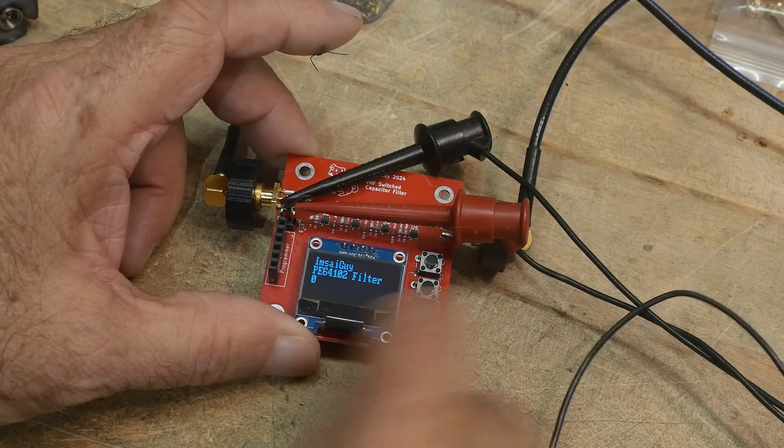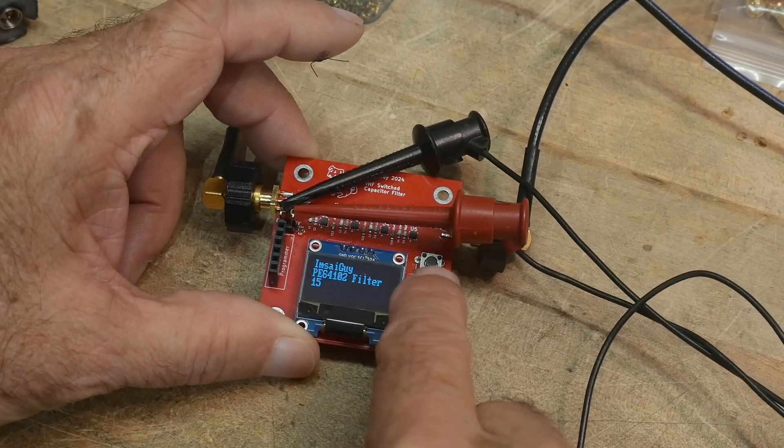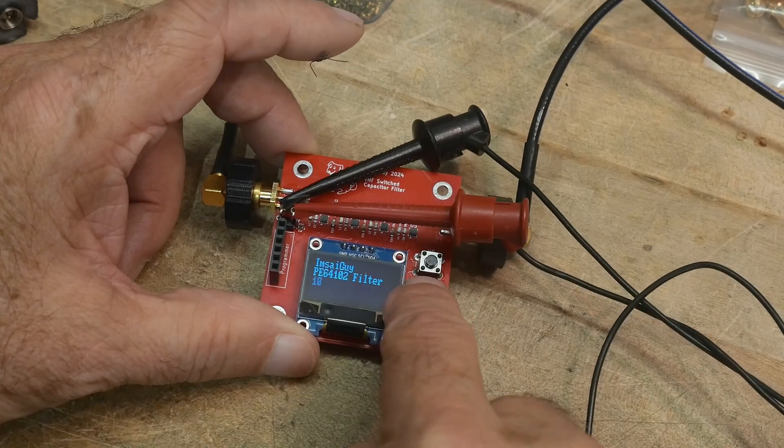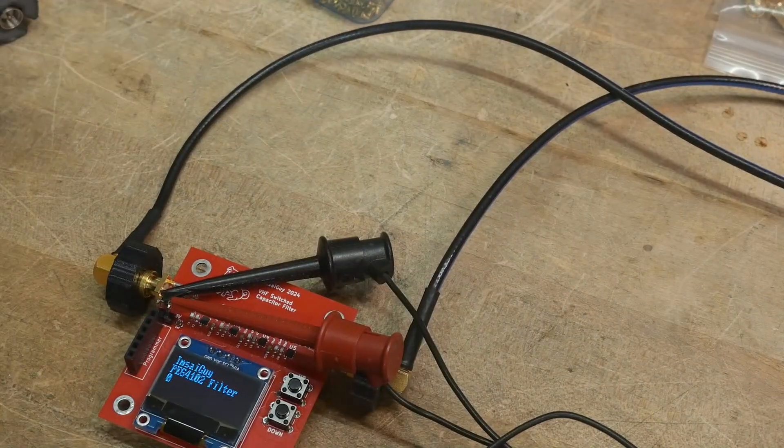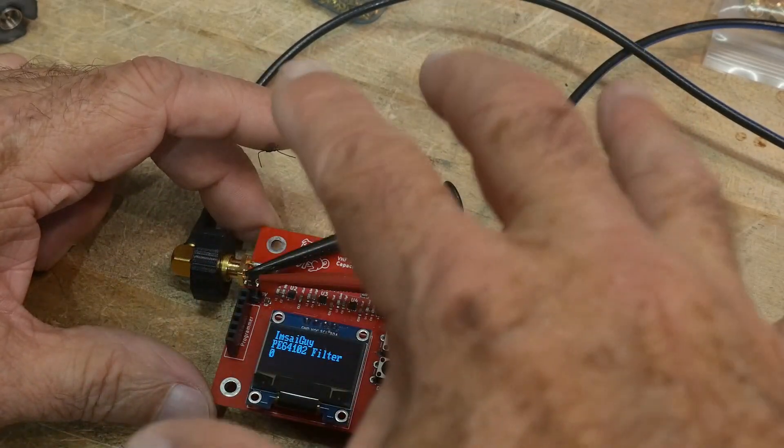If I hit the up button, it'll count up, and if I hit the down button, it counts down. So we should be able to see, and it's talking to all the filters. The capacitance will go up and down.